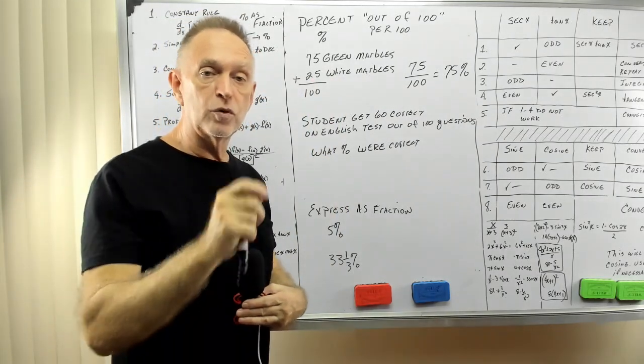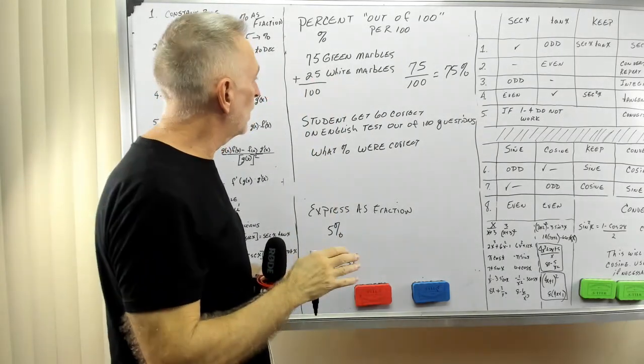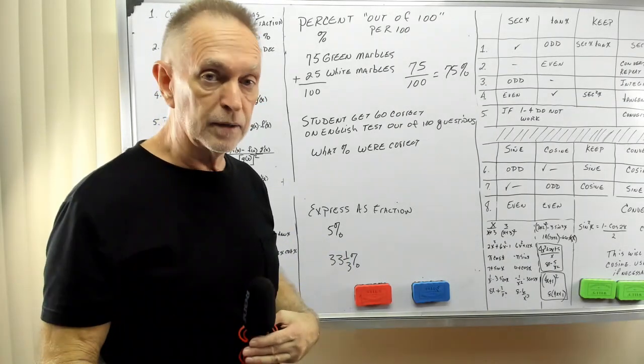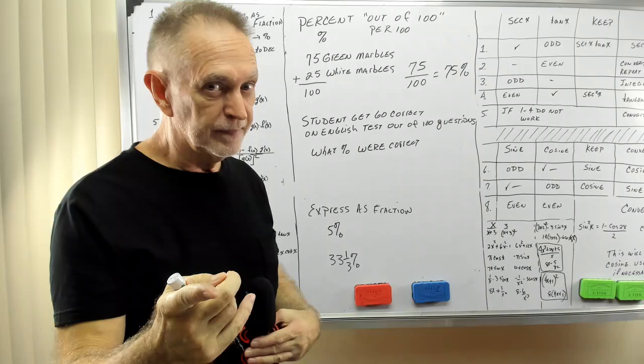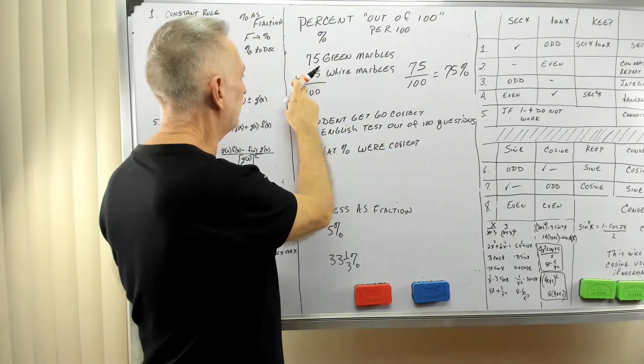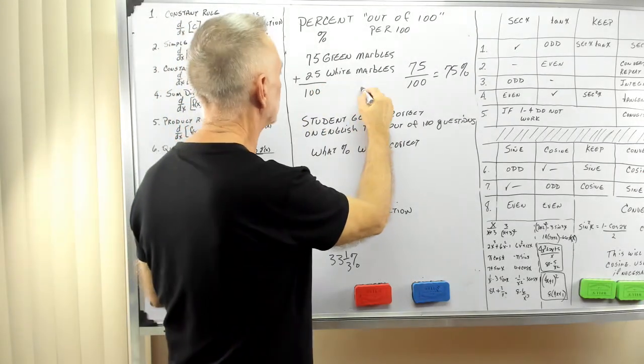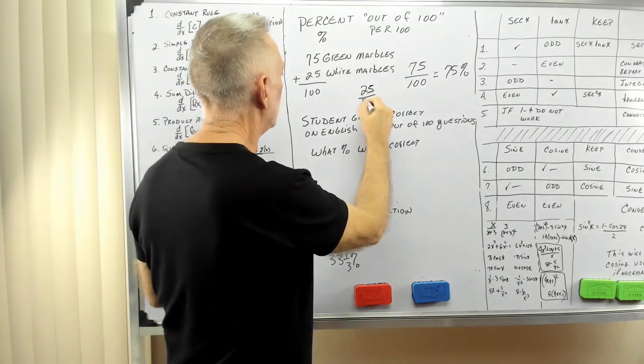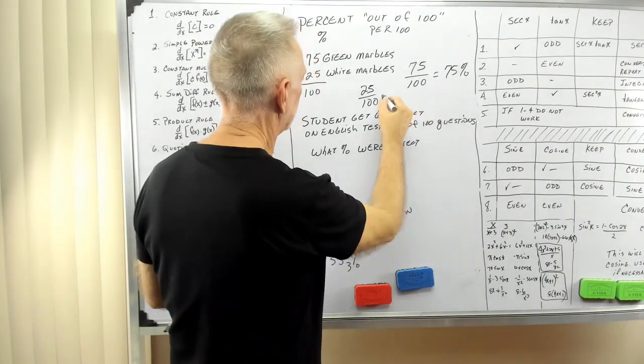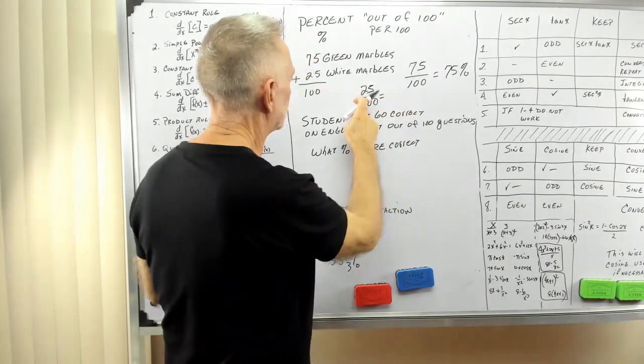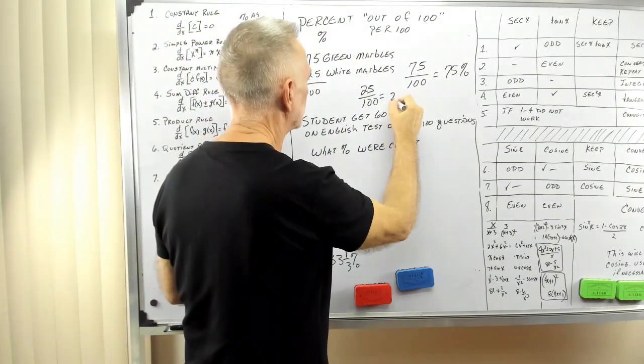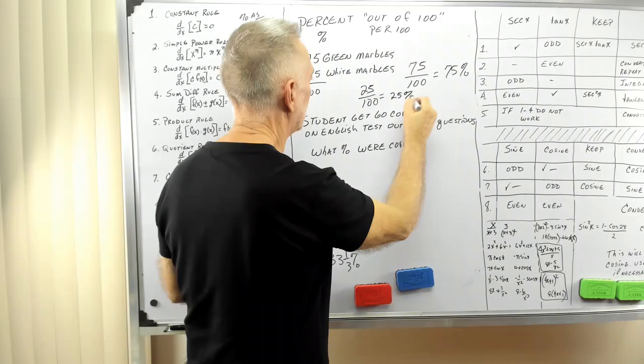So what would we say if somebody asked what percent of the marbles were white? We had 25 out of 100. So we had 25 out of 100. Since it's out of 100, that's what percent means. So I could say that's 25 percent.